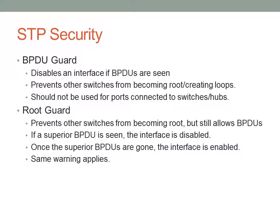The second security feature is RootGuard. RootGuard allows BPDUs, but if a superior BPDU is seen — meaning another switch wants to become root — the interface will be disabled. Once the superior BPDU is gone, the interface is brought back up. This allows you to connect more switches to the network while preventing any of them from becoming root.